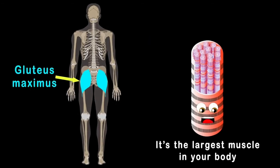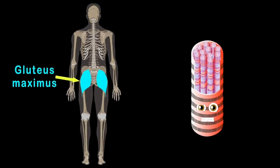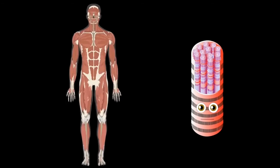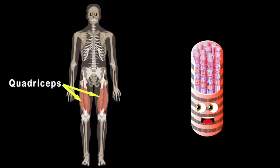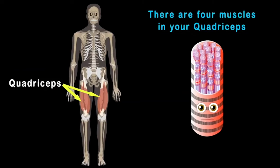Let's look at your gluteus maximus on your rear end. It's the largest muscle in your body — this is true, my friend. It keeps you standing upright and it helps you to ascend. The quadriceps are located on the front side of your thigh. There are four muscles that make up the quads that you do rely on.